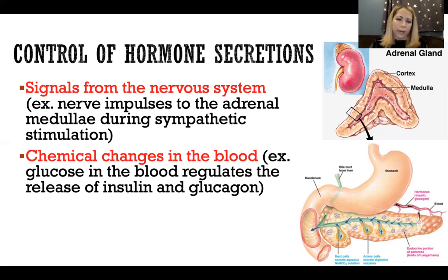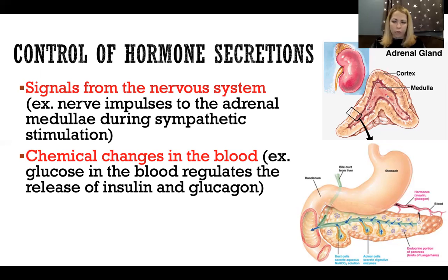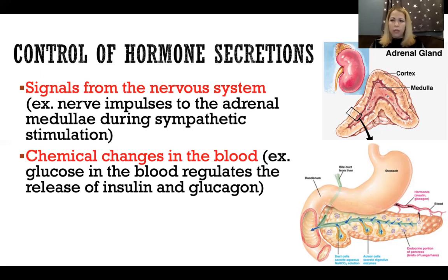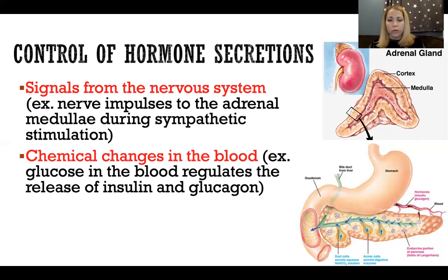Another way is via chemical changes in the blood. Some hormones are secreted in direct response to the thing that hormone is regulating. An example of that would be glucose in the blood — depending on how much glucose is present, it might stimulate release of either insulin or glucagon, which are two hormones used to either increase or decrease glucose in the blood.